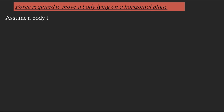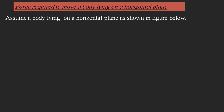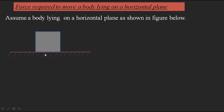We need to assume a body lying on a horizontal plane. Below on the plane I am taking one body of particular weight, which is stationary and already in equilibrium condition. If we want to move the body we need to apply a force. What is the minimum force required to make the body undergo motion by overcoming the friction between the two contact surfaces?